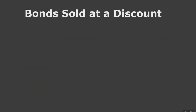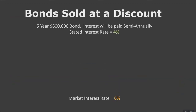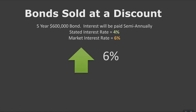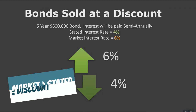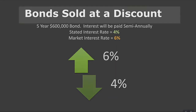The difference between the face maturity amount and the purchase price creates a premium or discount. For example, if we have a five-year, six hundred thousand dollar bond where interest will be paid semi-annually — so interest is going to be paid to the investor twice a year — the stated interest rate is four percent and the market interest rate at the time these bonds are purchased is six percent. In other words, the market interest rate is greater than the stated rate. Whenever this happens, these bonds are sold at a discount because if you were to invest elsewhere in the market, you would technically make more on your money, so they have to lower the cost of the bonds to encourage investors.